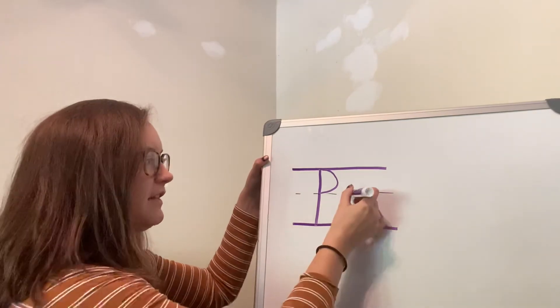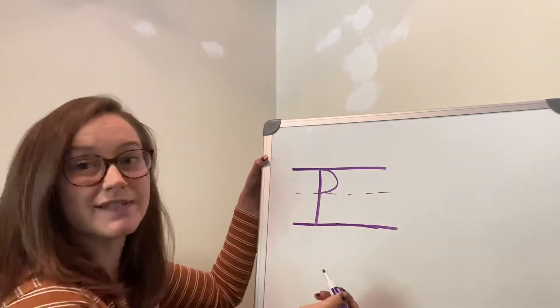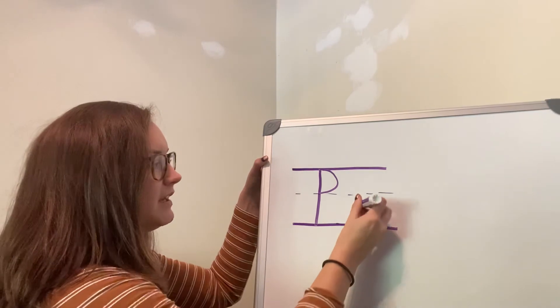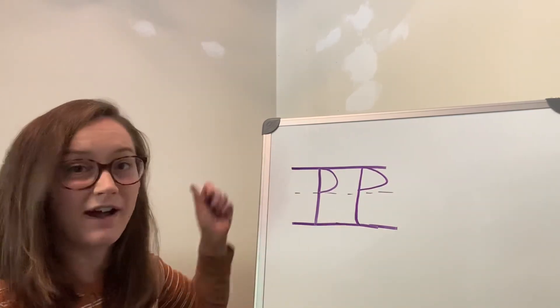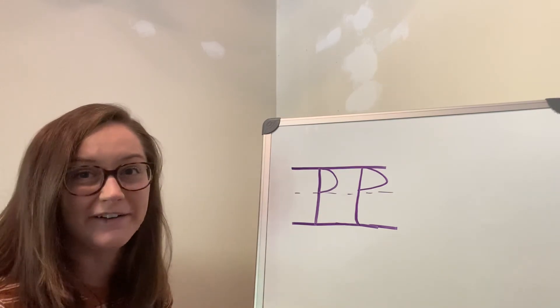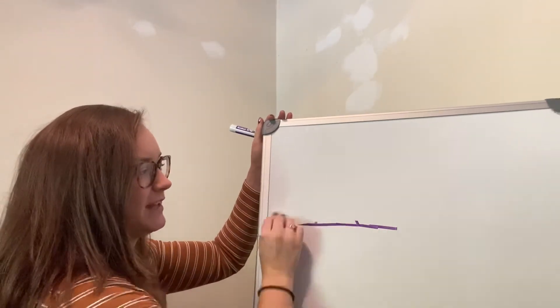So I'm gonna do another one next to it. See if you can see what's going on. Big line, little curve. Uh-oh. I started at the bottom. We're supposed to start at the top when we do our letters.